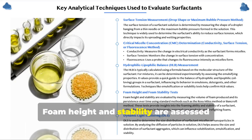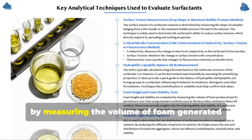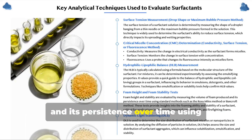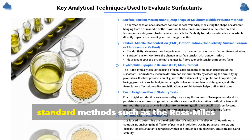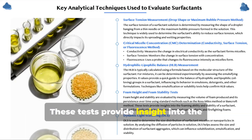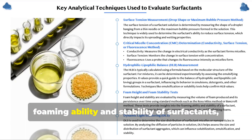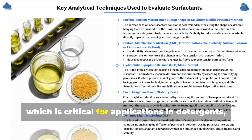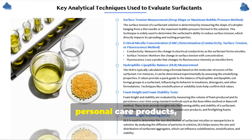Foam height and stability are assessed by measuring the volume of foam generated and its persistence over time, using standard methods such as the Ross-Miles method or the Bancroft method. These tests provide insight into the foaming ability and stability of surfactants, which is critical for applications in detergents, personal care products, and firefighting foams.